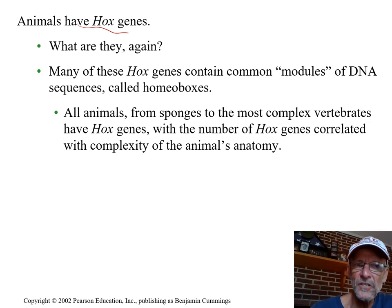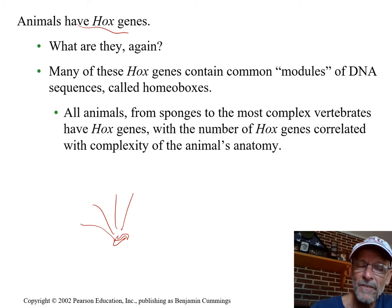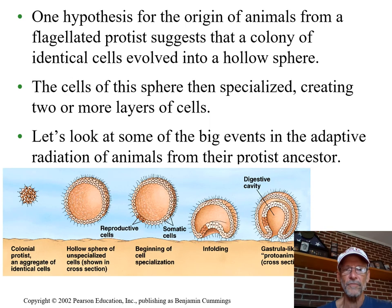Animals also have Hox genes. These are genes that produce protein products acting as transcription factors to turn on sets of other genes that cause big developmental events to happen — like the development of eyes, the development of limbs, and the development of different body segments.